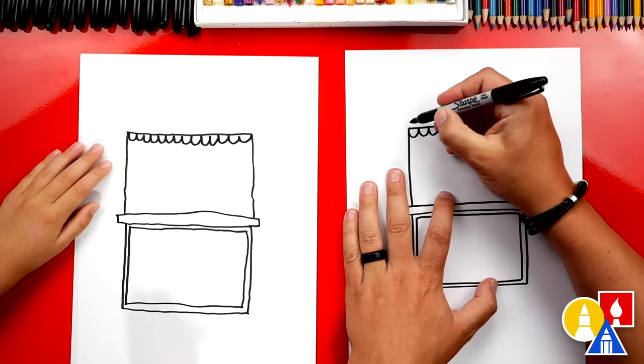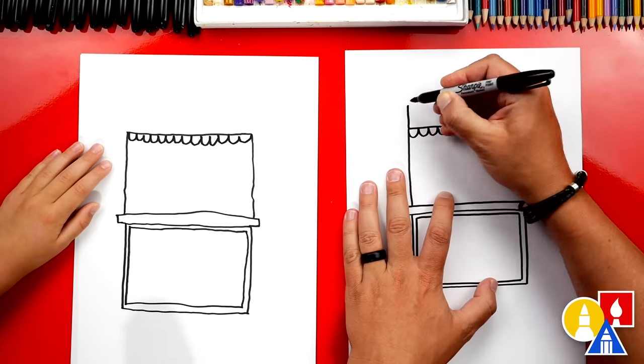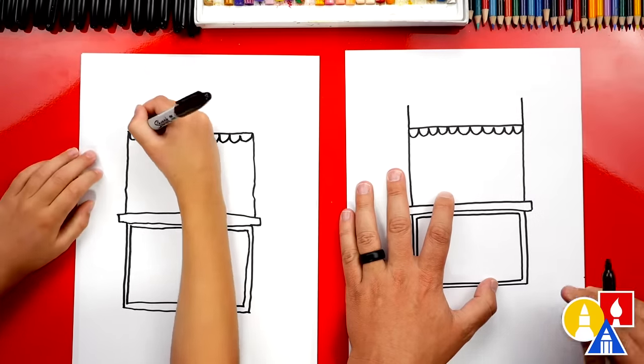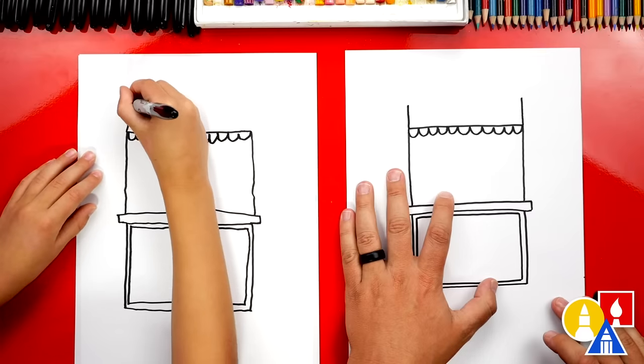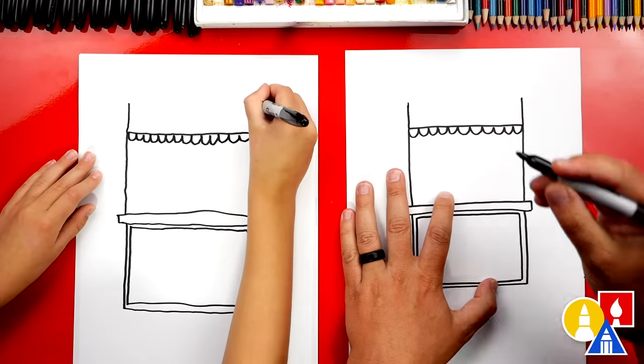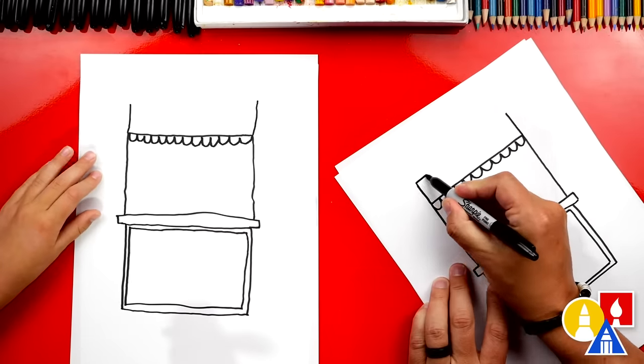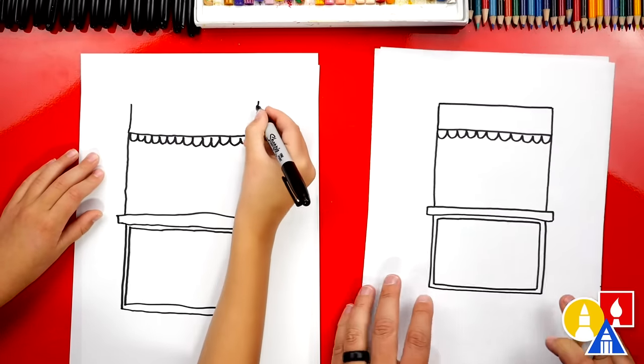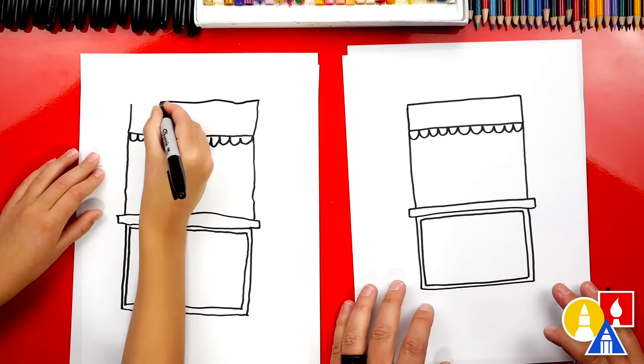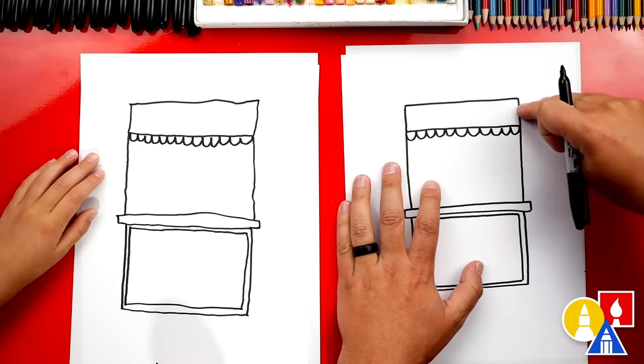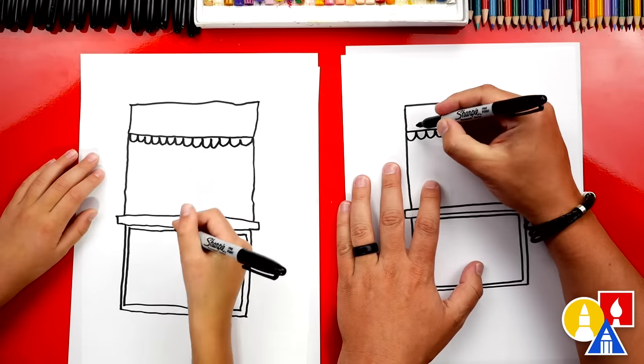Now let's draw another rectangle shape. We're going to draw a shorter line going up on each side. And then we can connect those also. Drawing a lot of rectangle shapes. Now let's divide up this rectangle into lots of little rectangles.